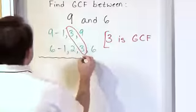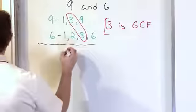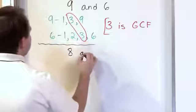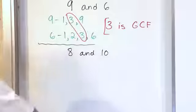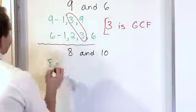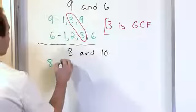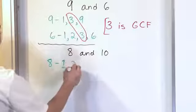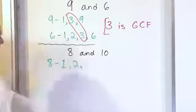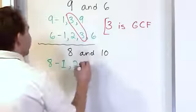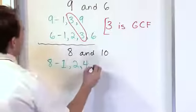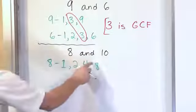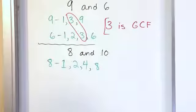Let's say I want to find the greatest common factor between the numbers eight and ten. I want to look at the factors of both of these numbers, then pick the one that's common to both and is the largest. For the number eight, we list the factors. One is always a factor. Two is a factor because it will divide into eight. Three is not a factor — it will not divide into eight. But four is a factor. Five, six, and seven are not factors because they can't be divided into eight.